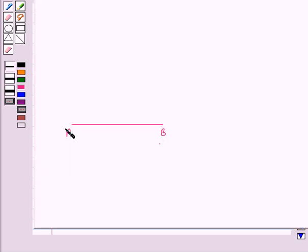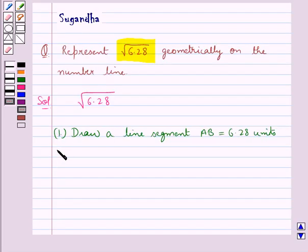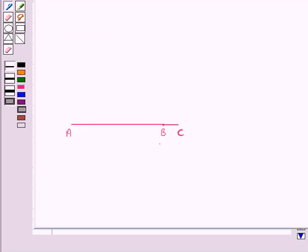This is the line segment AB of measure 6.28 units. Then in the next step, we extend AB to C such that BC is equal to 1 unit. So we have BC is equal to 1 unit.